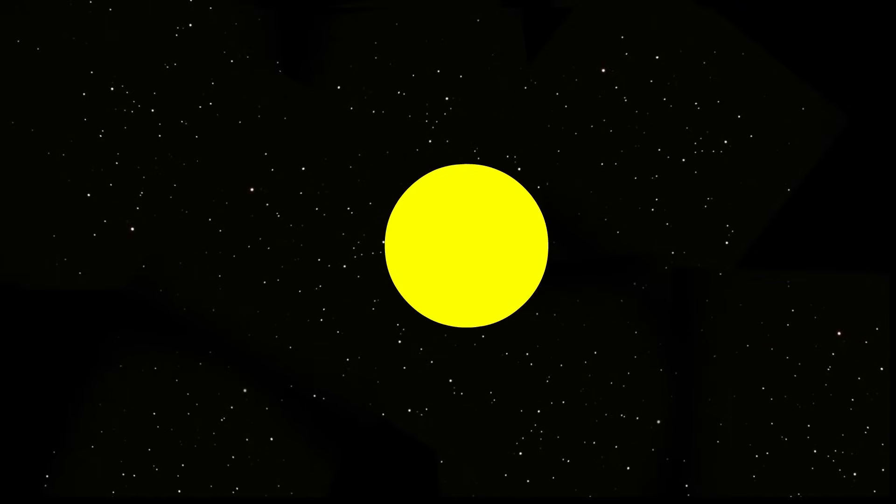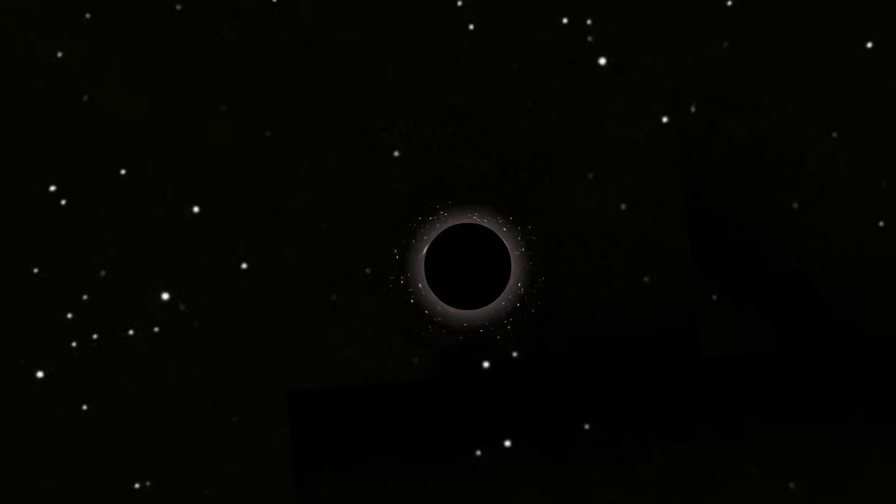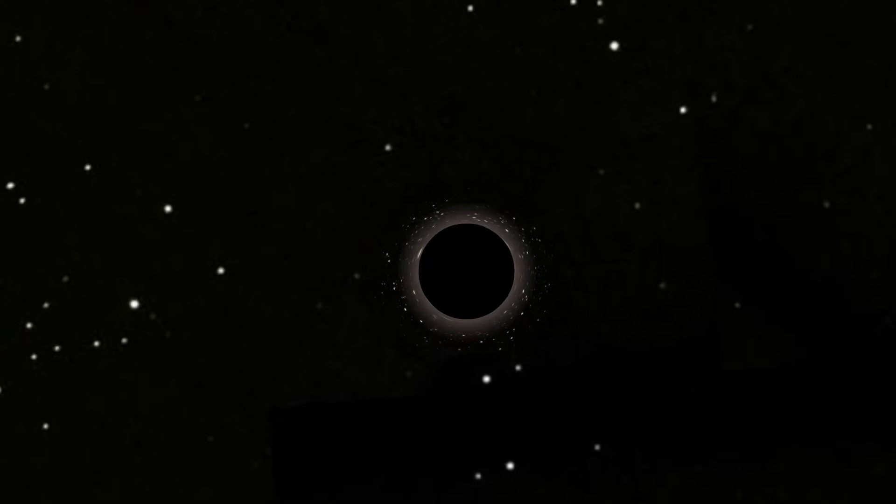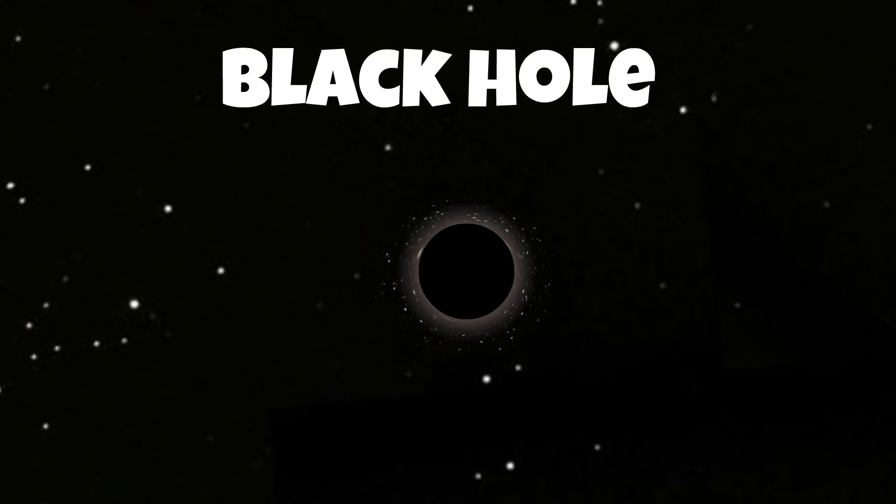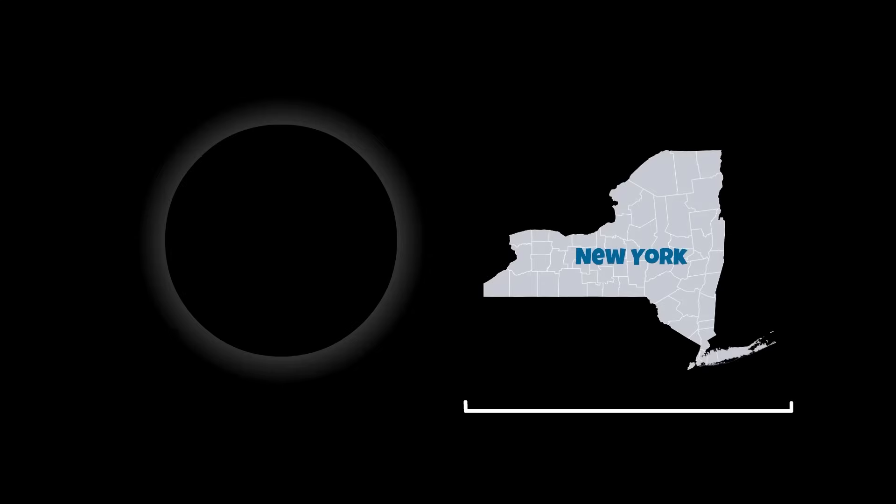When a massive star dies, it leaves a small but dense remnant core in its wake. If the mass of that core is more than roughly three times the mass of our Sun, the force of gravity overwhelms all other forces and a black hole is formed. A black hole is not just empty space. In fact, it's a great deal of space packed into a very small area. Think of a star that is ten times more massive than ours, being squeezed into a sphere with a diameter equal to the size of New York City.